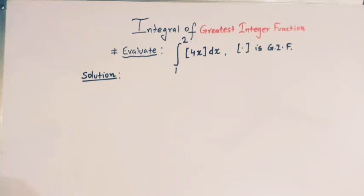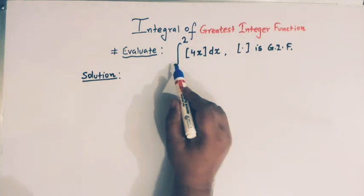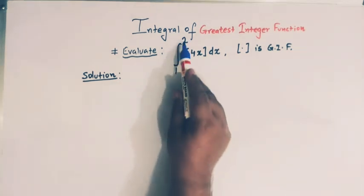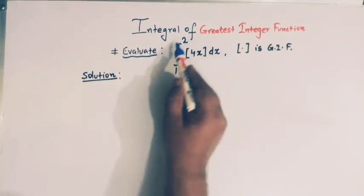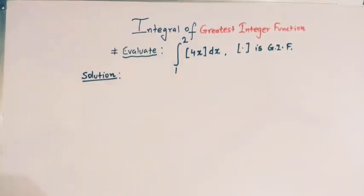Hello viewers, in today's class we are going to take up a very important conceptual problem in integration. Here we'll discuss the method of how to integrate the greatest integer function. We have a definite integral from 1 to 2 of the greatest integer function [4x], and we have to find its value. Let us discuss how we can evaluate this integral.